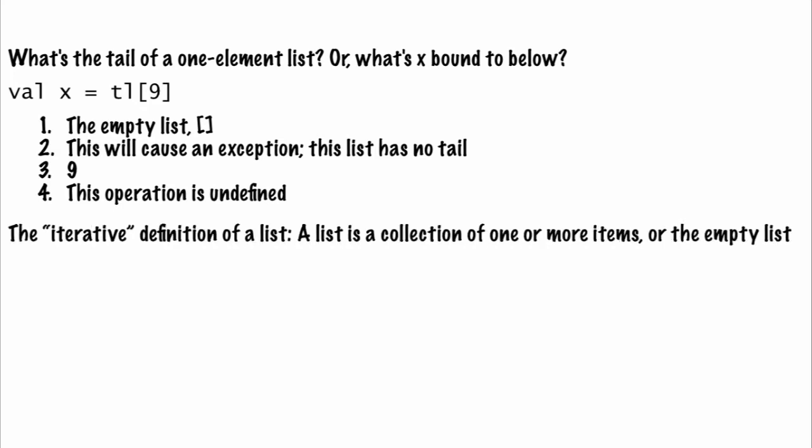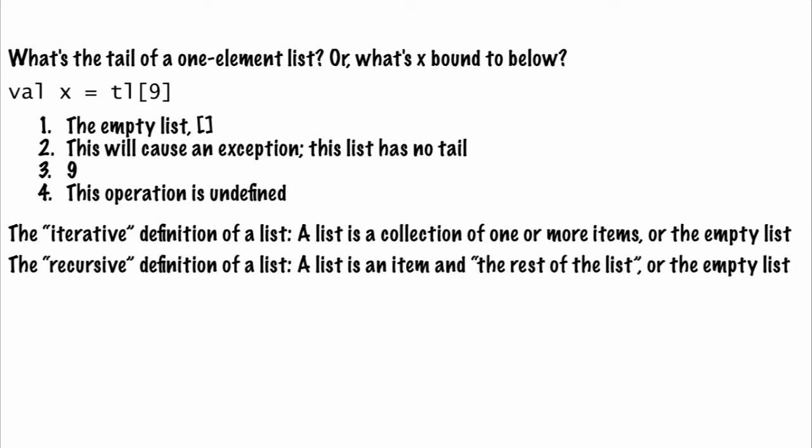The iterative definition of a list is a collection of one or more items, or an empty list. The recursive definition of a list is subtly different. A list is an item and the rest of the list, or an empty list.